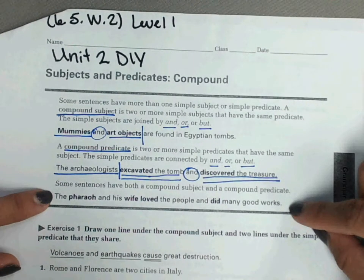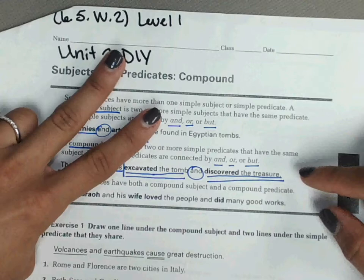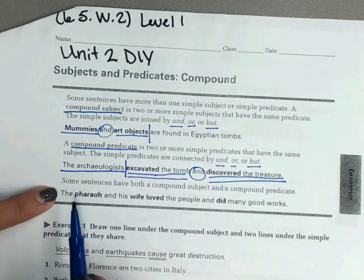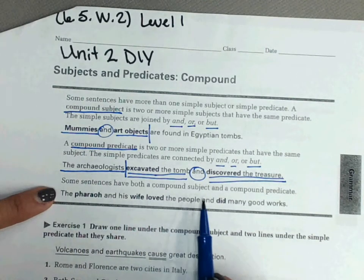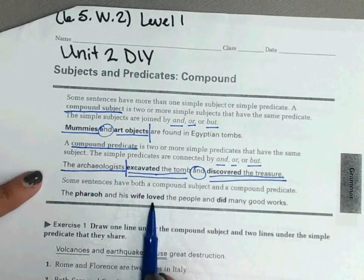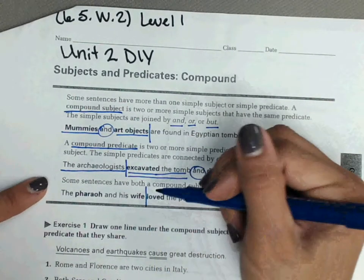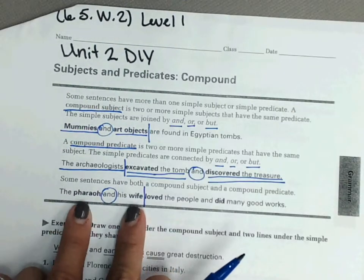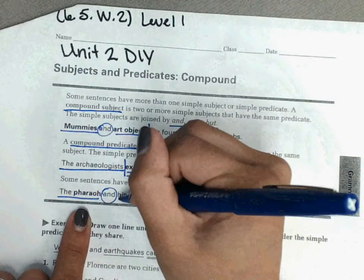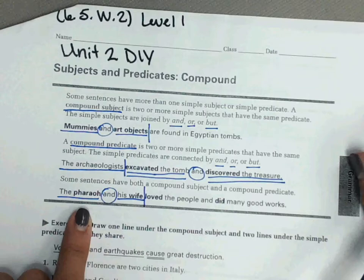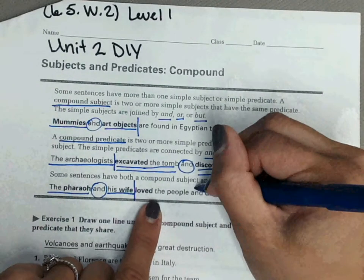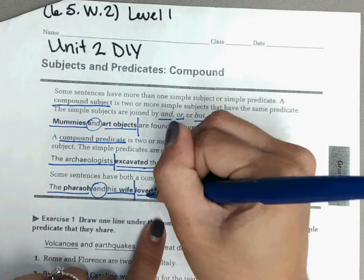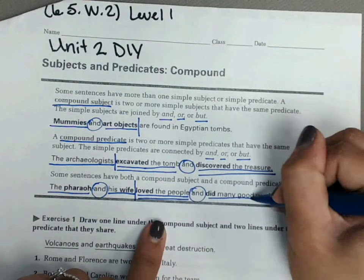Our sentence says: 'The pharaoh and his wife loved the people and did many good works.' Let's find our first verb, which is 'loved,' and put our line there. We have an 'and,' and on either side we have our two subjects: 'the pharaoh' and 'his wife.' For our predicate, we have another 'and,' and on either side we have the two different actions: they both 'loved the people' and 'did many good works.'